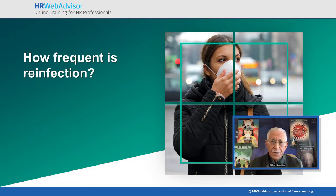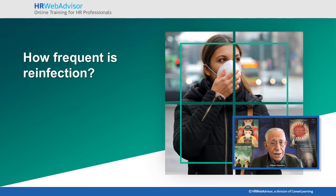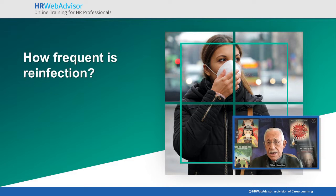If you look at the question from a slightly greater distance, coronaviruses have the propensity to infect — the cold-causing coronaviruses — the same person with exactly the same strain year after year. There is something that the coronaviruses do that both weakens the primary immune response in many people and even the long-term, so-called memory response. There are now very detailed studies that show that exactly the same strain by sequence analysis infects people multiple times. One person studied was reinfected with the same clade of the same strain four times in six years.